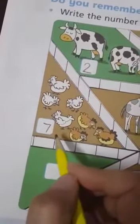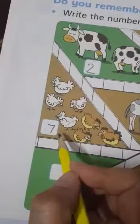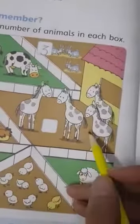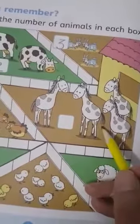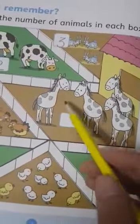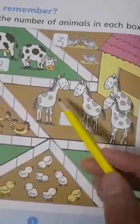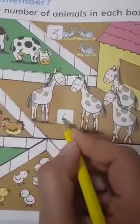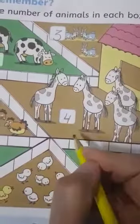So we write 7 in the box. Then we have here donkeys — 1, 2, 3, 4. So there are 4 donkeys, and you write 4 in the box.